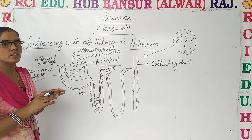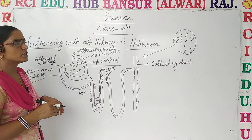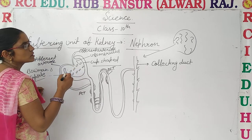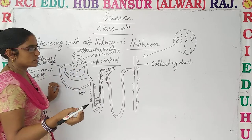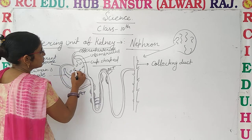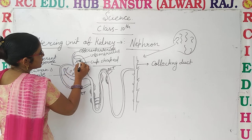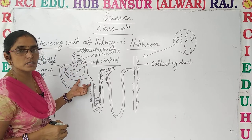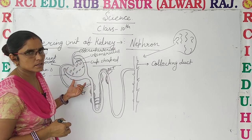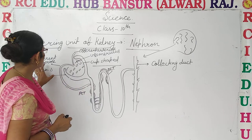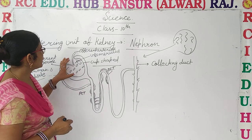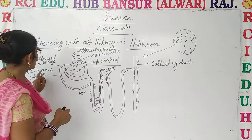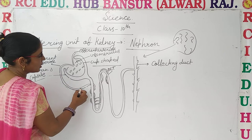This Bowman's capsule has a network-like structure or filtering unit that is known as the glomerulus. This part is known as the glomerulus, where filtration of the blood takes place. These are the afferent and efferent arteries which carry the blood.